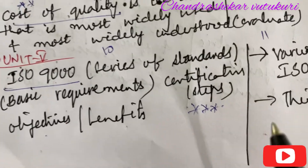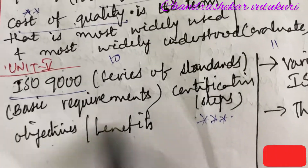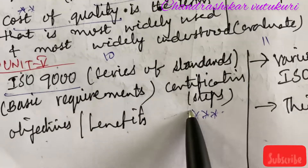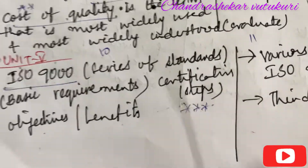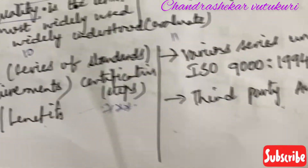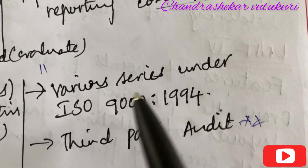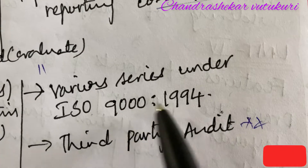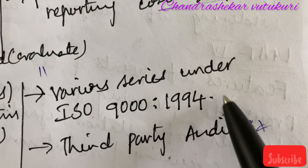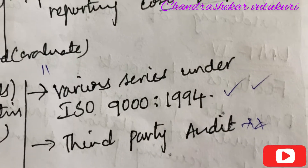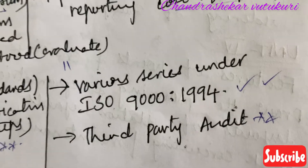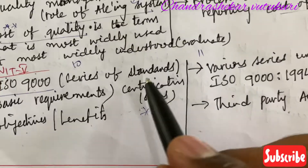The series of standards and certification steps are also set to be the topmost gunshot question — you can go 15 out of 15 in the form of short and long. The various series under ISO 9000 to 1994 is also one of the short or long questions which may occur in the question paper in the 10th and 11th.